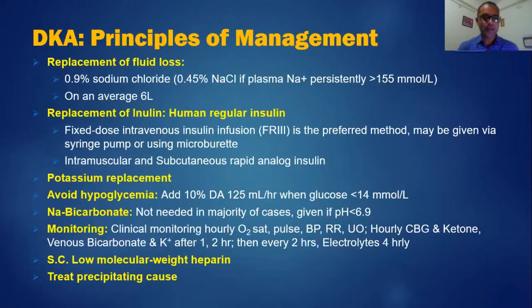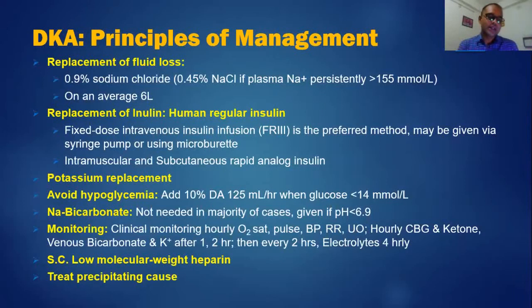Monitoring in DKA includes clinical and biochemical monitoring. Hourly oxygen saturation, vitals, and capillary blood glucose should be monitored, along with ketone bodies. Venous bicarbonate and potassium should be checked at 1 hour, 2 hours, then every 2 hours. Other electrolytes should be checked every 4 hours. Subcutaneous low molecular weight heparin should be given to prevent venous thromboembolism. The precipitating cause should be treated, and if not obvious, empiric antibiotic cover should be given assuming infection as the precipitant.